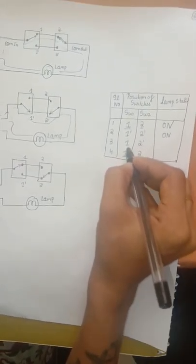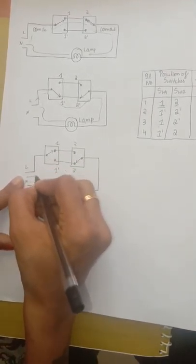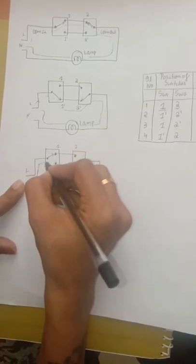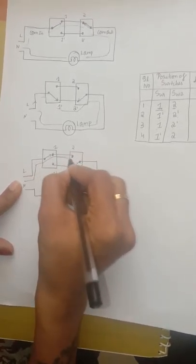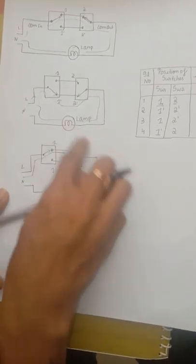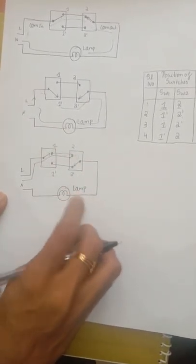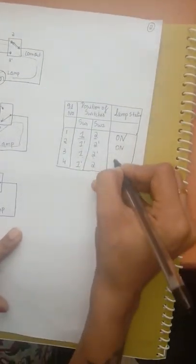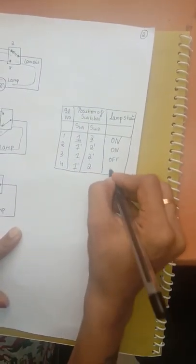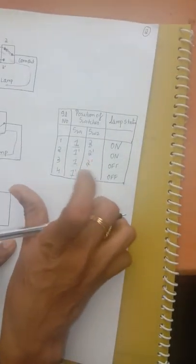For the next combination — S1 at 1 and S2 at 2-dash — the supply starts from L, moves to 1 and then to 2. After 2, there is no path for the current to continue through the circuit, meaning it is an open circuit. At open circuit condition the lamp never operates, so at 1 and 2-dash it is off. Similarly, at 1-dash and 2 it is also off. This is how we form the truth table for a two-way control switch.